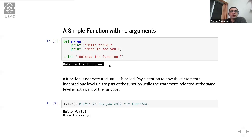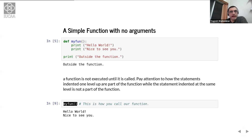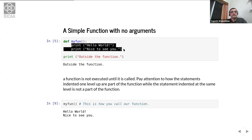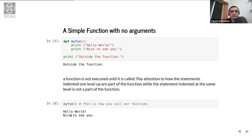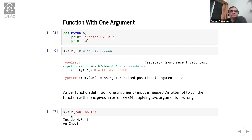In order to execute this function, we simply call `myfun()` — the open and close brackets indicate this is a function call. It won't print 'outside the function' because that is not part of the function, but it will execute the two lines inside the function and give you the output.